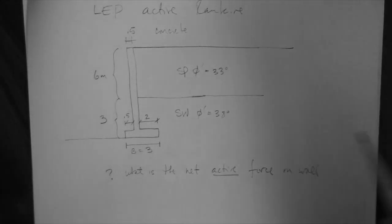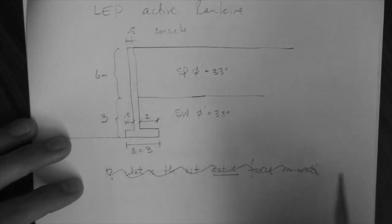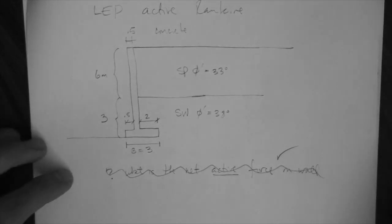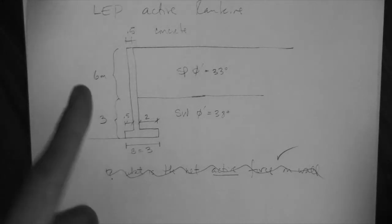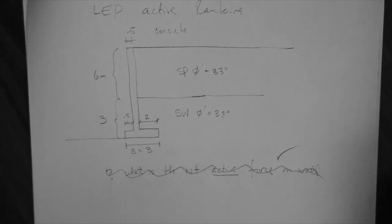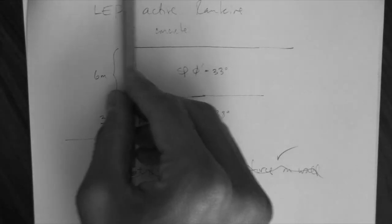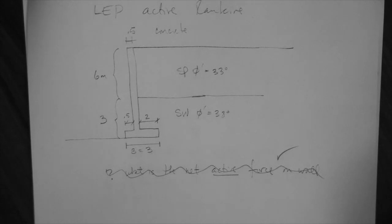So we already have this. We have the active force on the wall. We calculated it before. So now we need to know if that force is going to cause this wall to slide out so much that we prefer not to have that wall.